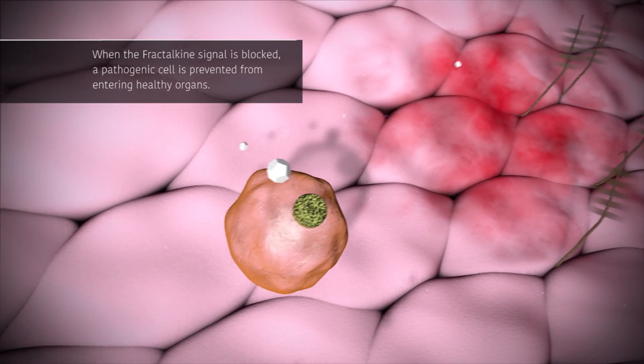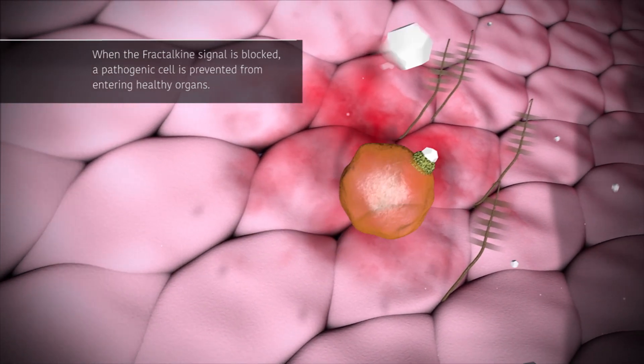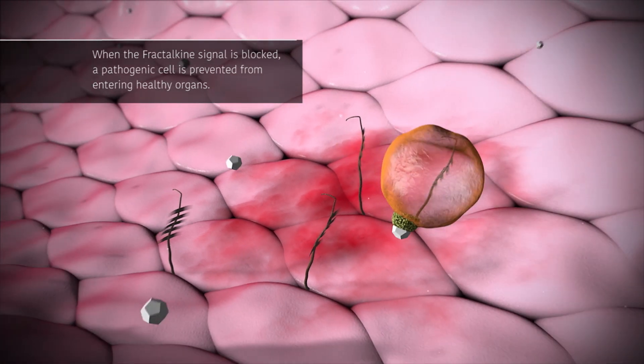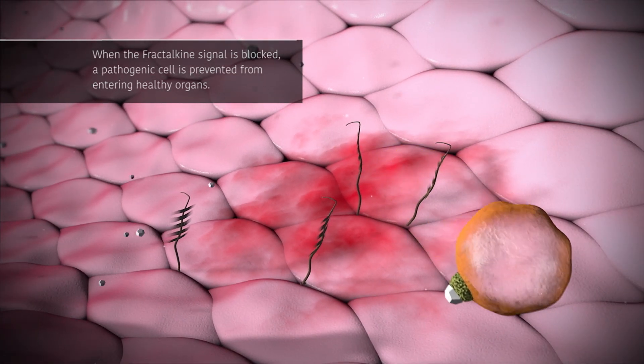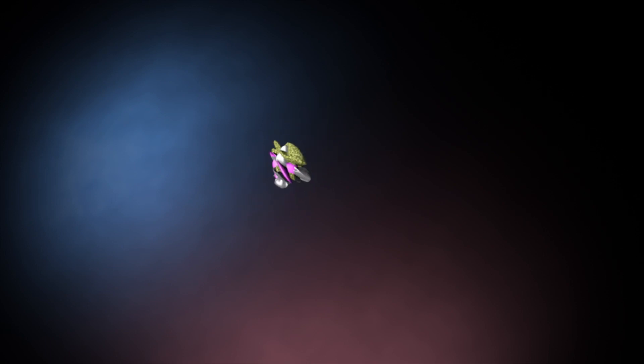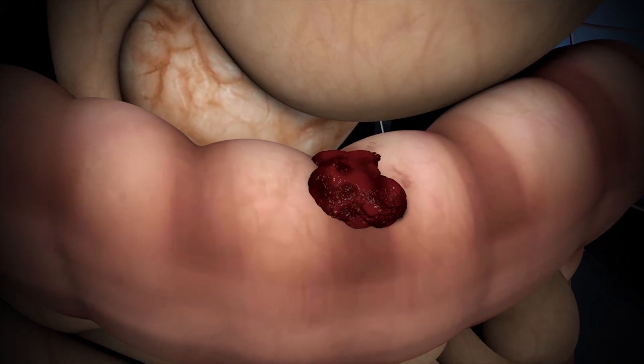When the fractalkine signal is blocked, a pathogenic cell is prevented from entering healthy organs. In this way, both autoimmune diseases and cancer metastases are prevented.